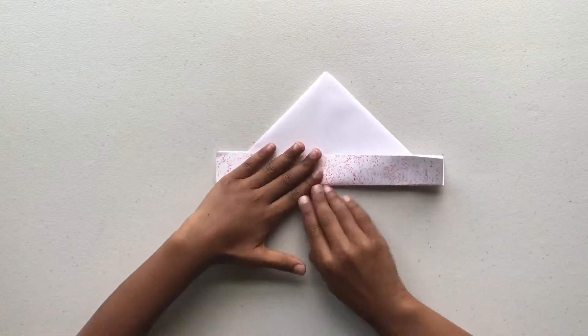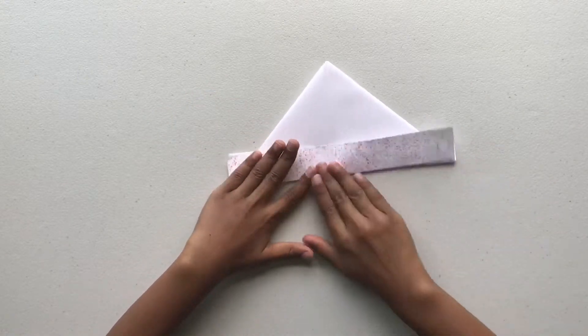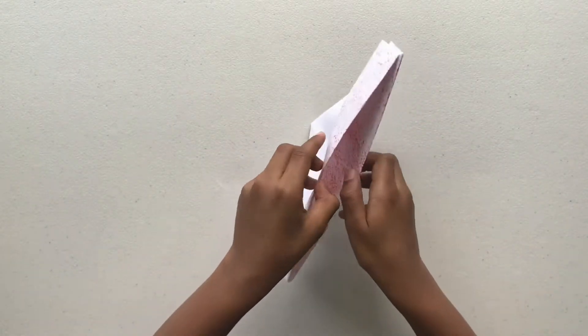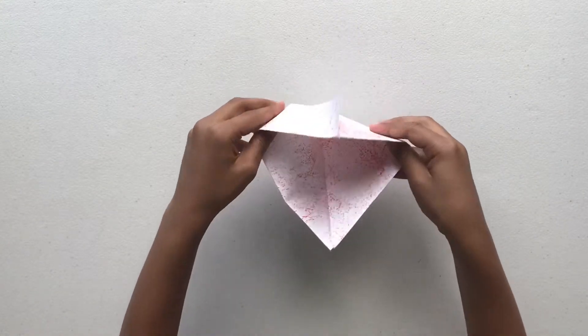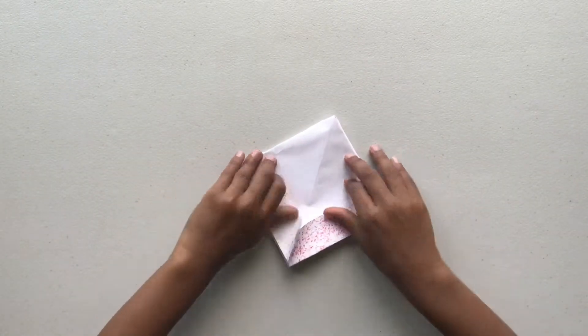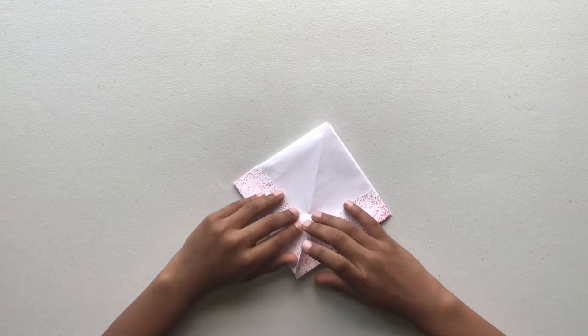Open the bottom of the triangle and fold it into a square. Make sure you tuck in the edges.